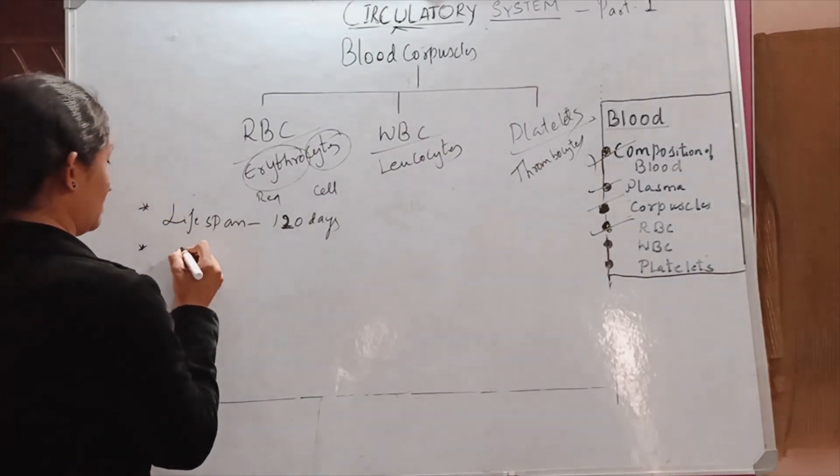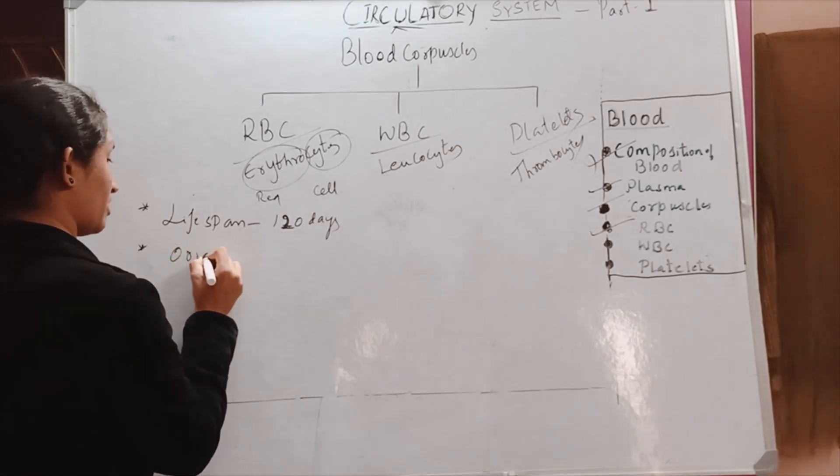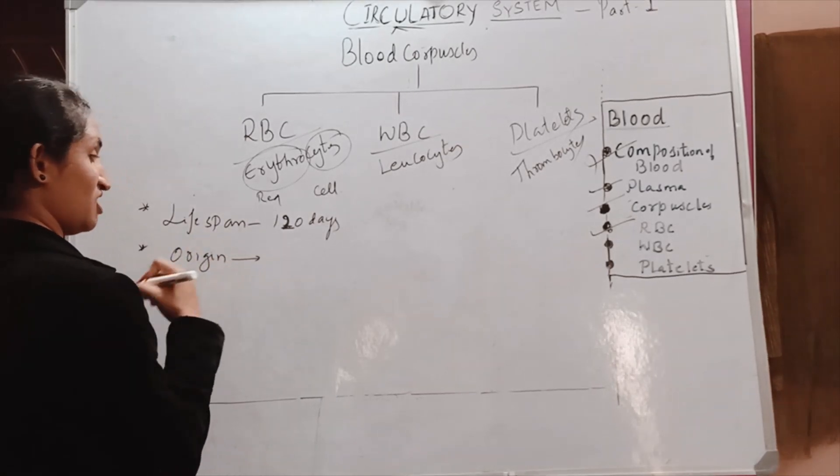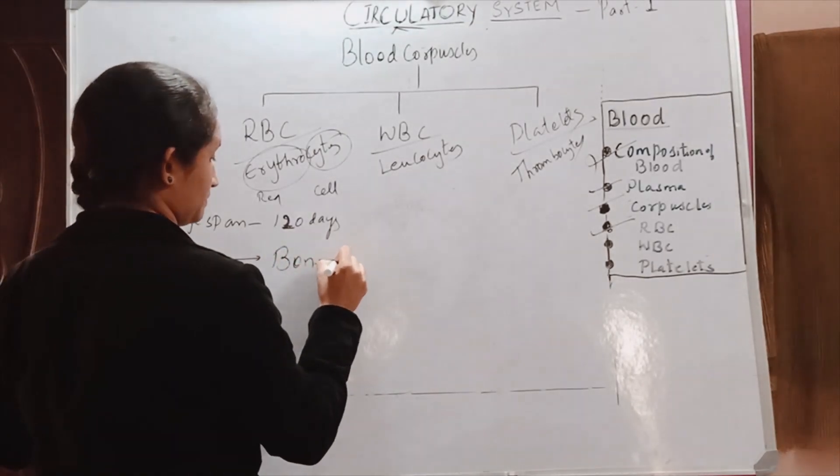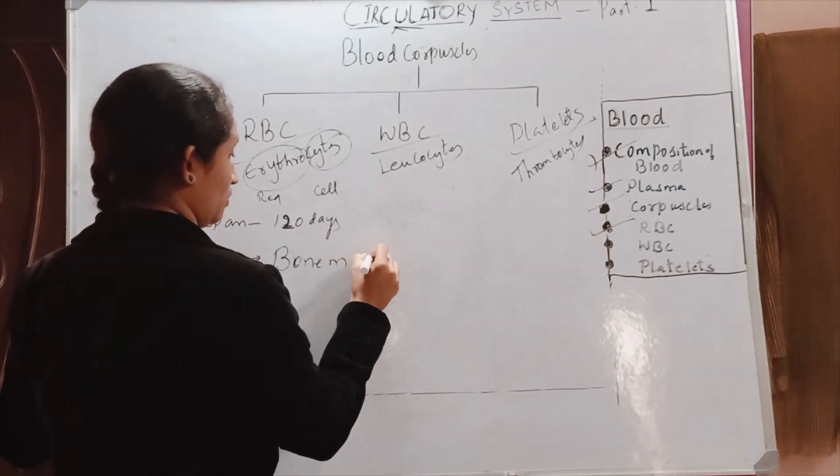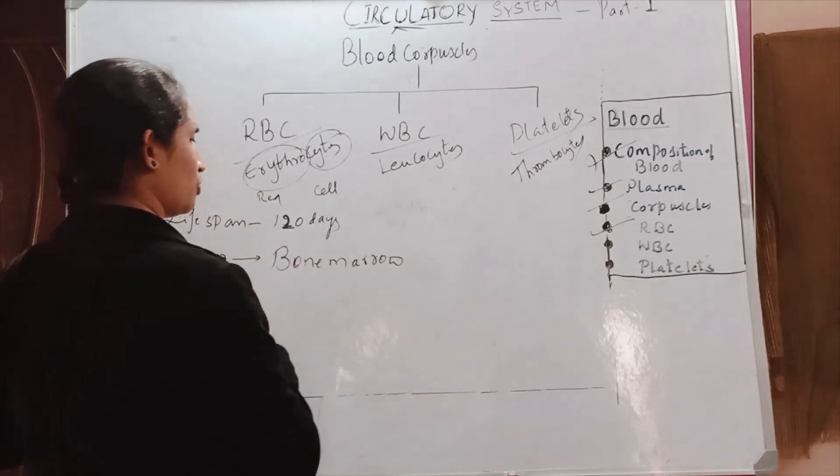Before that, where do the RBCs originate from? Where are they produced in the body? RBCs are originated in bone marrow, in the red bone marrow. What is bone marrow?